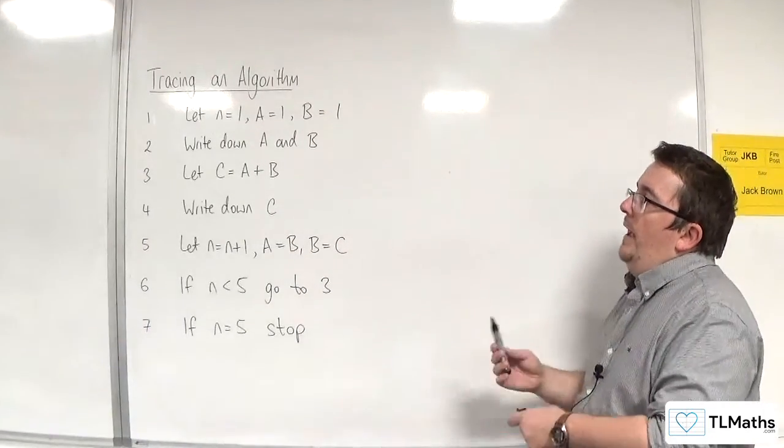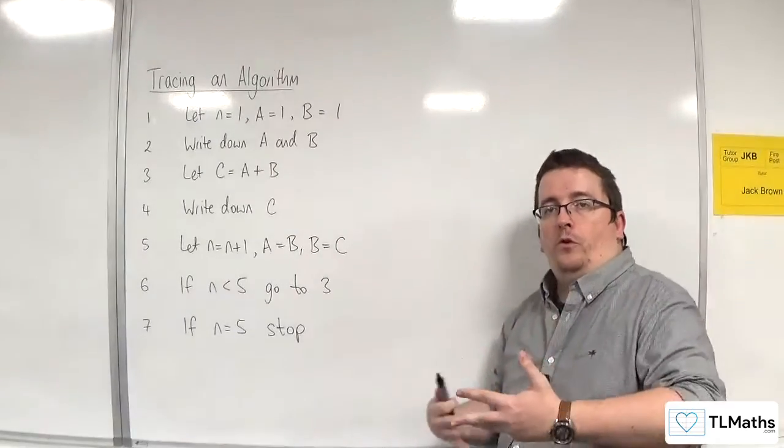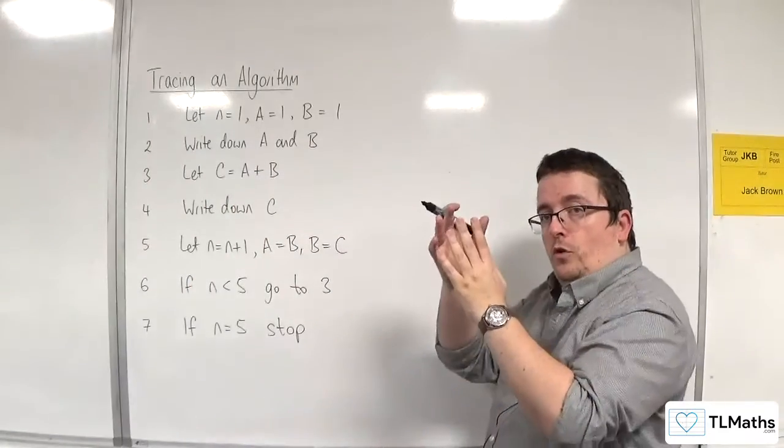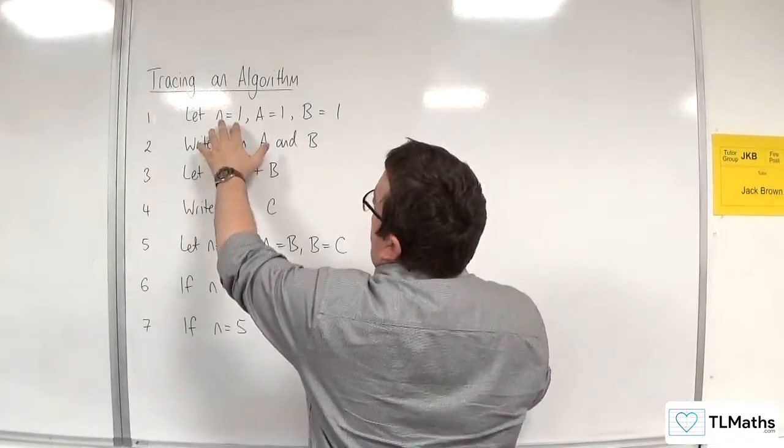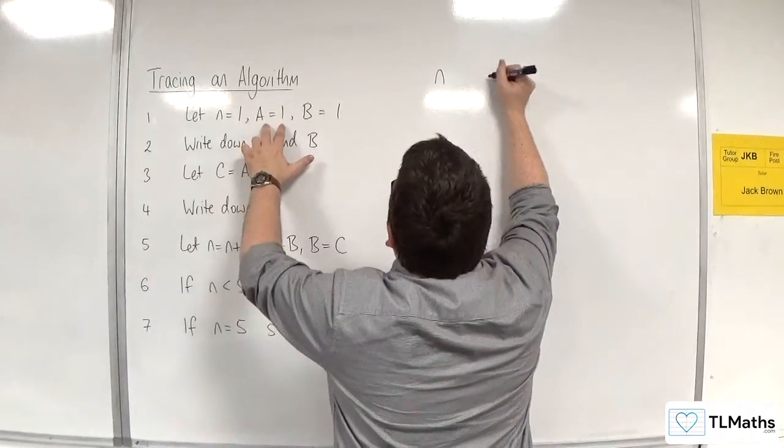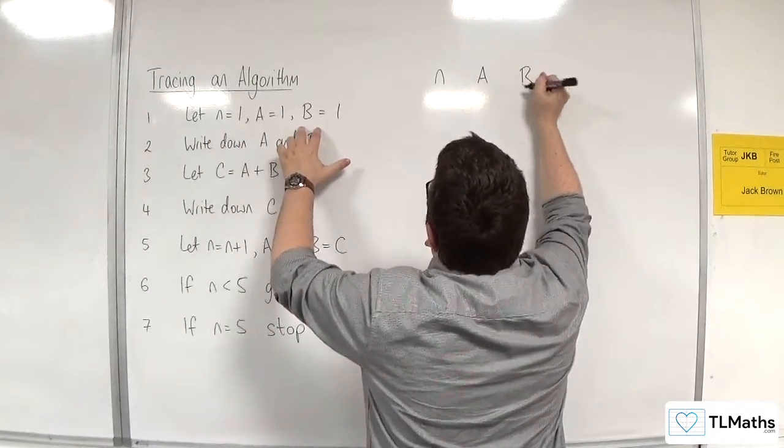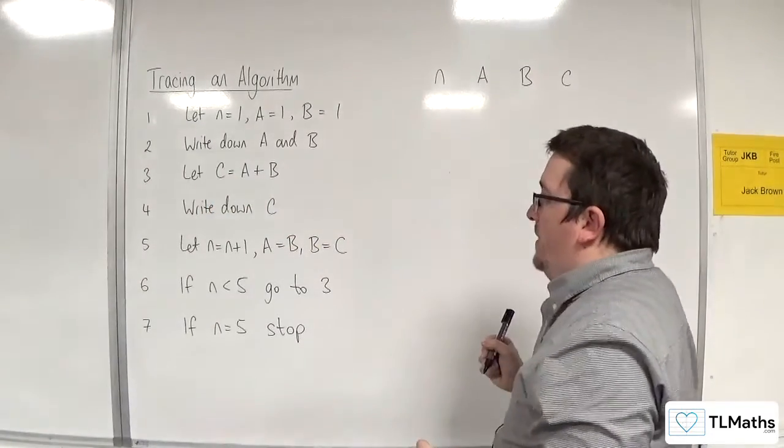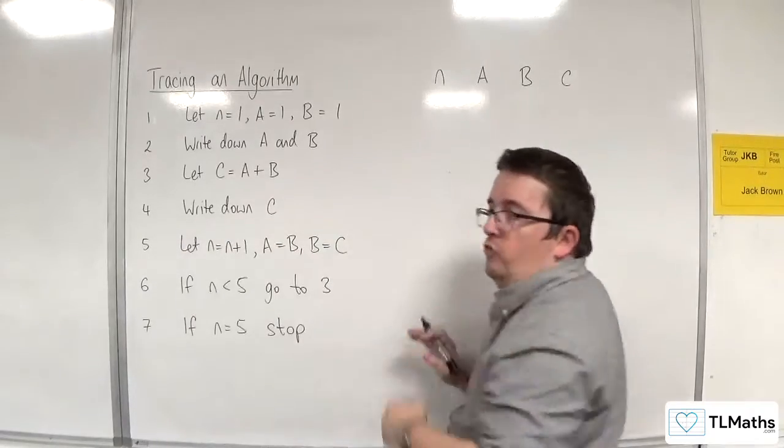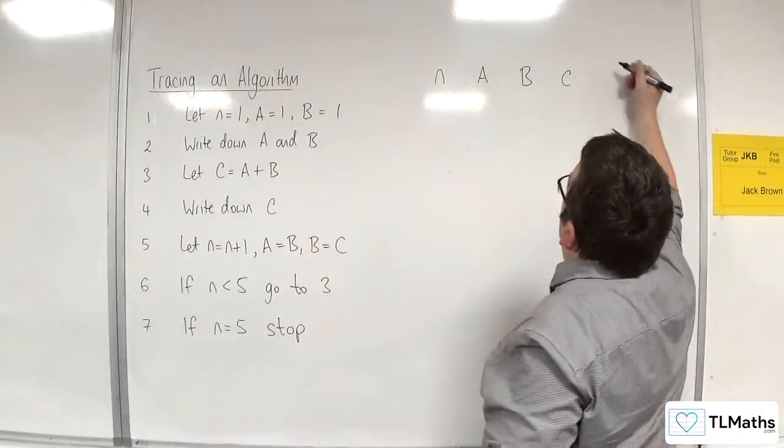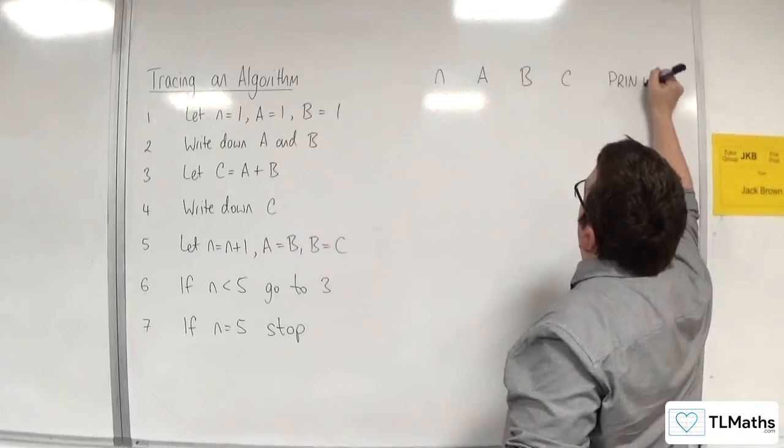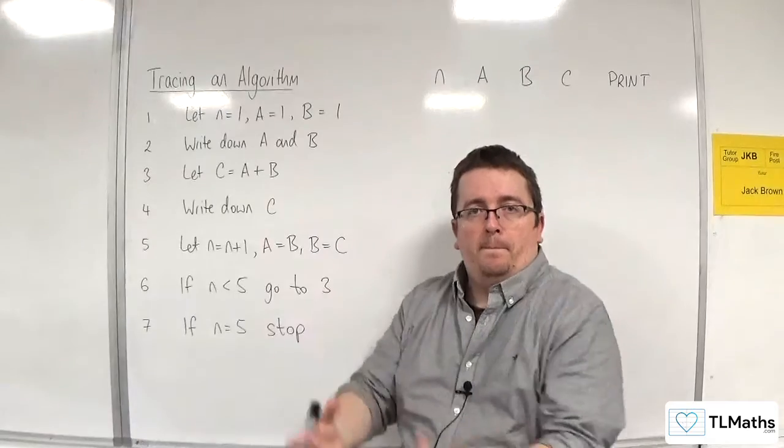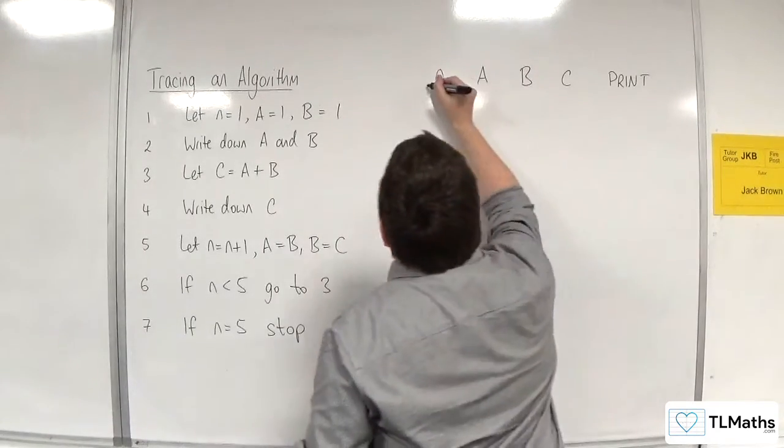So, how you should start this is you should look for letters in the algorithm, and they should become your column headers. So, I can see that we've got an N, and we've got an A, and we've got a B. And I can also see that we've got a C, and there's no other letters, but I see that in step four, there's this write-down C. So, for that, we quite often refer to it as print. It's as if they're the values that your algorithm is outputting. So that's what we'll have.